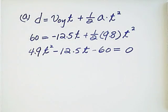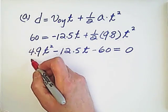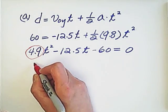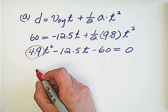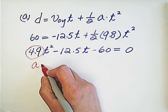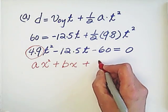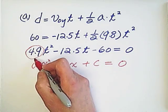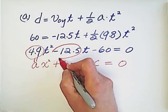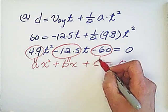To solve the quadratic equation, we compare with the standard form: a times x squared plus b times x plus c equals 0. So a equals 4.9, b equals negative 12.5, and c equals negative 60.